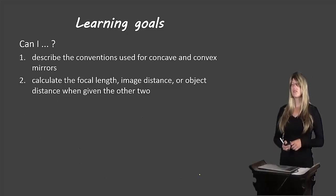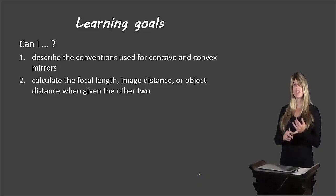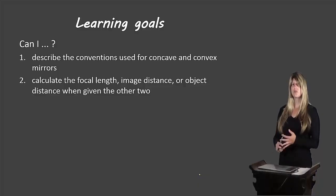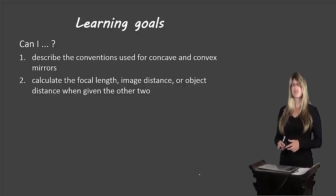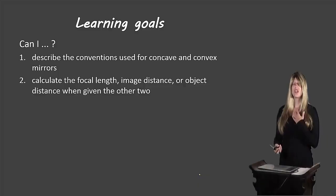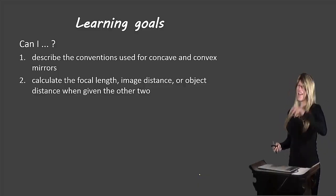Let's review our learning goals: Can you describe the conventions used for concave and convex mirrors — the positive and negative signs? And can you calculate the focal length, image distance, or object distance when given the other two? We've looked at two examples, and the third type is very similar. If you can do all these things, fantastic! If not, please re-watch the video, and if you're still having trouble, come ask me in class. That's all for now. Bye-bye!